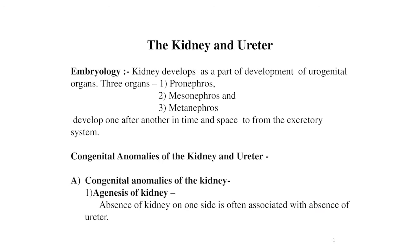The kidney develops as part of the urogenital organs. There are three organs: first is the pronephros, second is the mesonephros, and third is the metanephros. These develop one after another in time and space to form the excretory system. Now, congenital anomalies of the kidney and ureter — first is agenesis of the kidney.